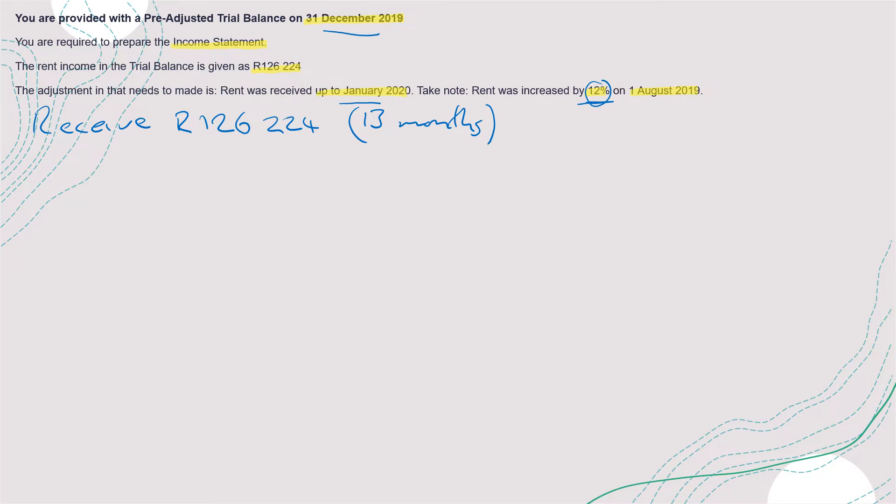So our rent before increase, that is 100%. Times how many months - rent was increased on 1 August 2019. The year started on 1st of January 2019. So from 1st of January 2019 to 31 July 2019, that will be seven months.